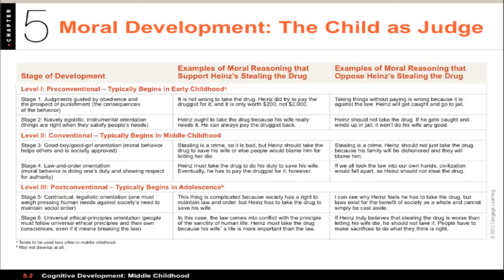Kohlberg has three general levels. Level one, pre-conventional, begins in early childhood. Level two is conventional moral reasoning in middle childhood. Level three is post-conventional. Within each level there are two separate stages. In the pre-conventional level, children base their moral judgments on the consequences for themselves — it's about obedience and punishment. For instance, don't take the drug because it's not allowed and you'll get in trouble, or the pharmacist is breaking the law. It tends to be rather self-focused.